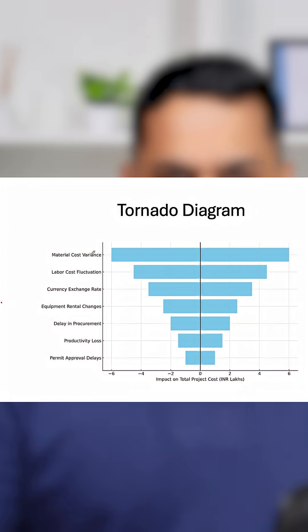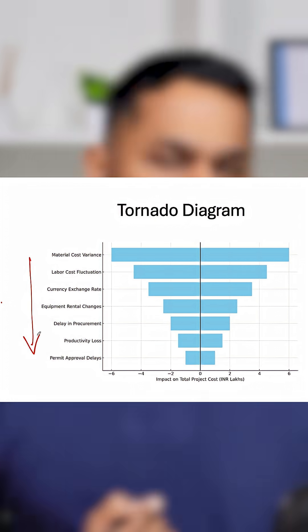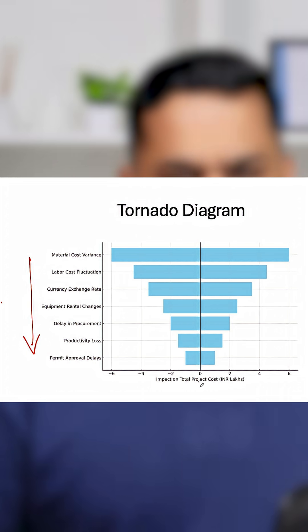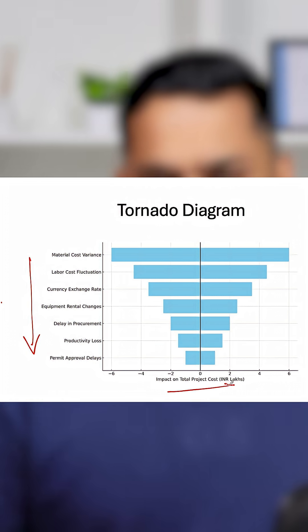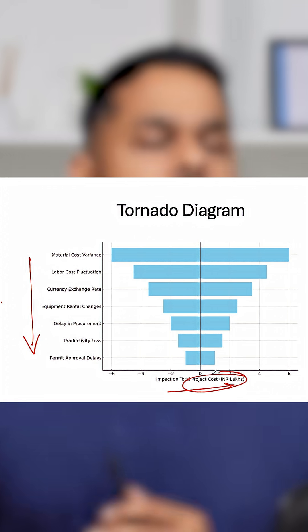On the y-axis, you have the risk factors. On the x-axis, you have the impact. In this case, we are talking about impact on the project cost.